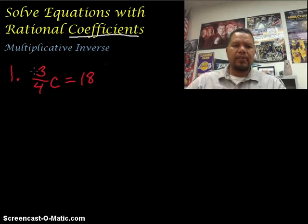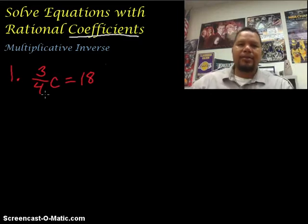So number one, we're going to solve this equation right here. So we have the equation 3 fourths times c equals 18. Our coefficient is a rational number, it's a fraction, and we want to isolate for c or get c by itself.